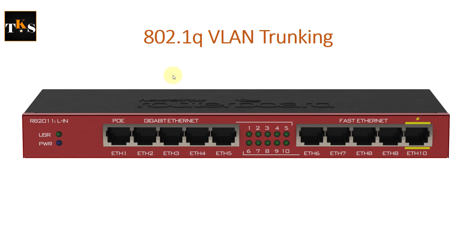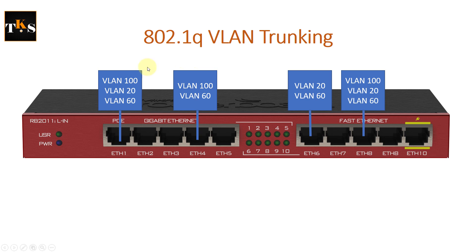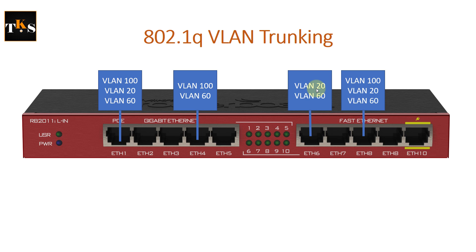VLAN trunking, which is the 802.1Q standard, is the ability for an ethernet switch and router to pass traffic for multiple VLANs over a single port. So we have ethernet one, and we have VLAN 100, VLAN 20, and VLAN 60 all passing over ethernet one. Regular traffic that is not in any VLAN will also be able to travel over that port. You can select your ports and choose which VLANs you want to pass through that ethernet port. That is how VLAN trunking works.